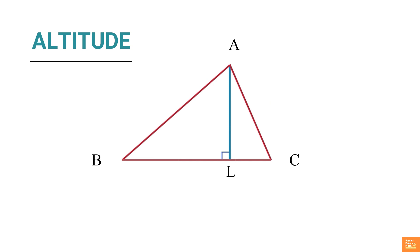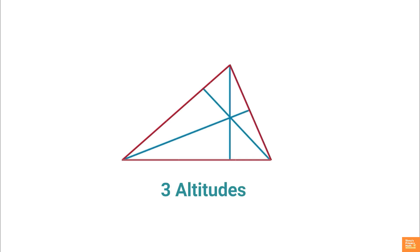Here, the line segment AL is an altitude of the triangle. Since there are three sides, so three bases, therefore the triangle has three altitudes.